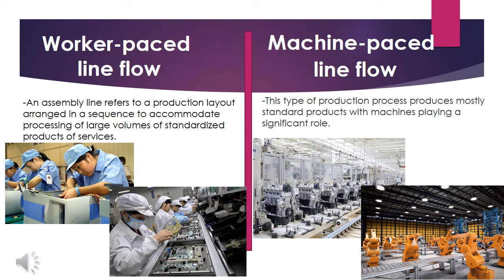Now let's proceed to worker-paced line flow and machine-based line flow. Worker-paced line flow refers to an assembly line arranged in a sequence to accommodate processing of large volumes of standardized products or services, where the quality and quantity of output depend greatly on the skill of the labor utilized. Machine-based line flow produces mostly standard products with machines playing a significant role. The main difference is that worker-paced line flow uses labor, while machine-based line flow replaces workers with machines.